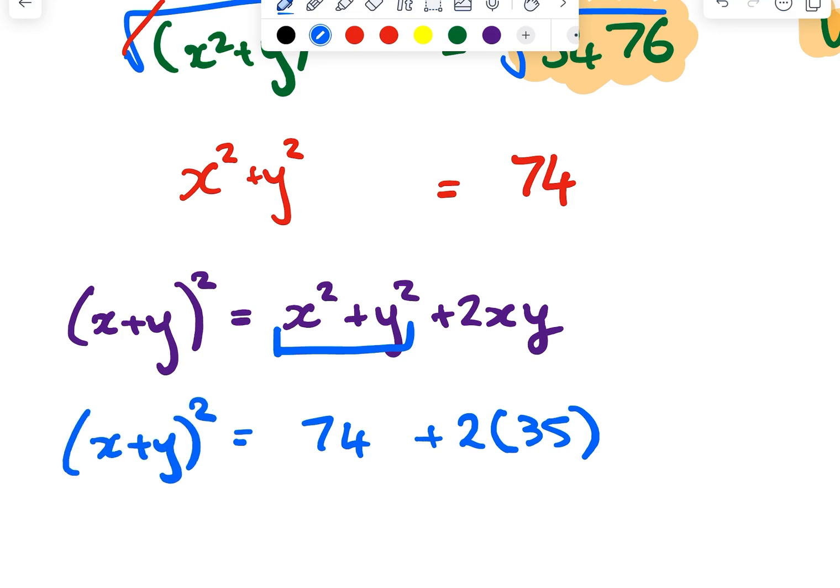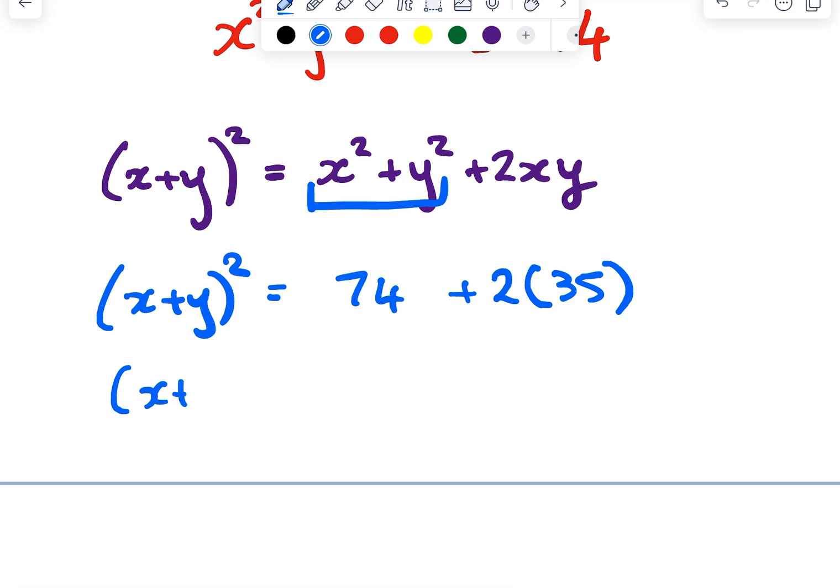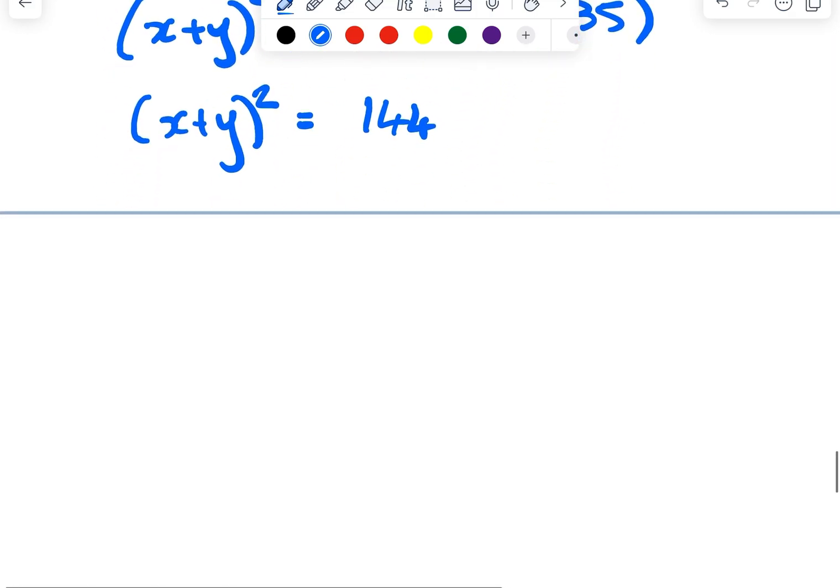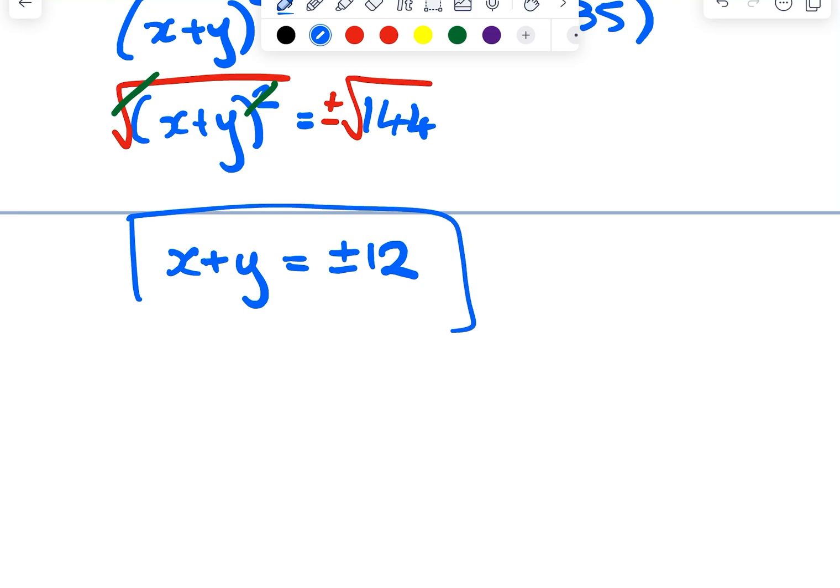So x plus y squared altogether is 74 plus 70 which is 144. We're one step away now. All we've got to do is square root both sides. Remembering that when we square root a square number we need to consider plus or minus. So altogether the square root and the square is going to cancel. So on the left I'm going to be left with x plus y and on the right the square root of 144 is 12 or minus 12. That is our final answer.